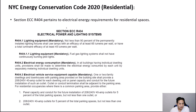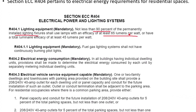The electrical requirements in the residential section of the energy code are a small section. For lighting, at least 90 percent of permanently installed light fixtures must use lamps with an efficacy of at least 65 lumens per watt, or the total luminaire efficacy must be at least 45 lumens per watt. This data is on the specification sheet for the light fixture — look up the model number to confirm it meets these requirements.